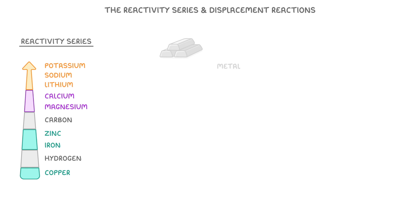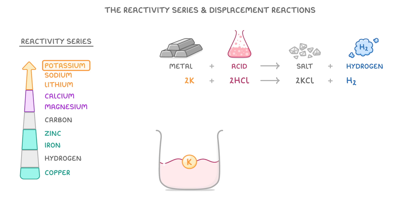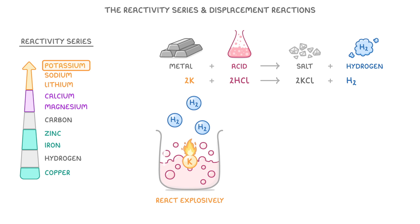If we react a metal with an acid, it will form a salt and hydrogen gas. For example, if we reacted potassium with hydrochloric acid, it would form potassium chloride and hydrogen. And because potassium is so reactive, it would react explosively, possibly catching fire and whizzing around as it produces loads of hydrogen.